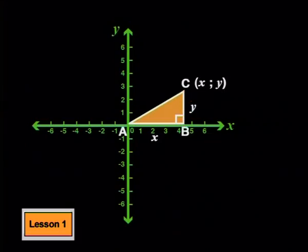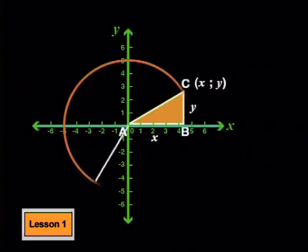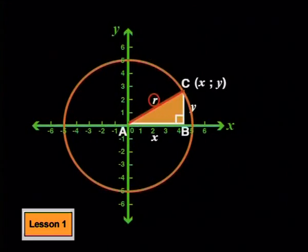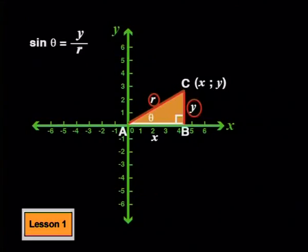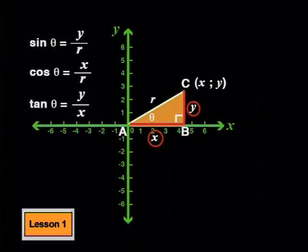What label can we use for the hypotenuse? Well, this hypotenuse can also be seen as the radius of a circle with its center at the origin. So we'll use an R for radius to represent the hypotenuse. So in this triangle, sin theta is y divided by r, cos theta is x divided by r, and tan theta is y divided by x.